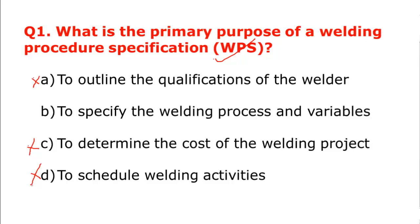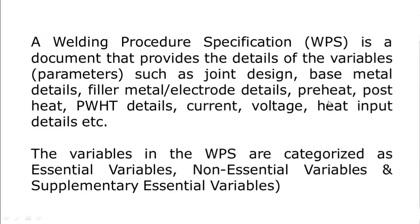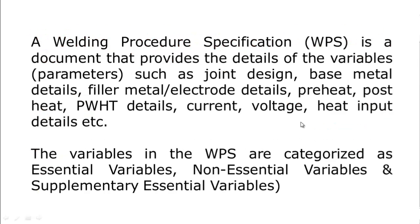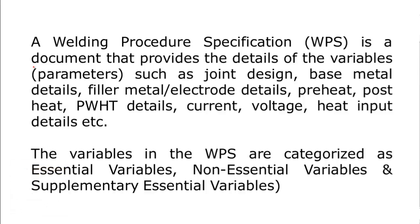In WPS, all the welding parameters to be used during welding are mentioned — the welding process and different parameters like base metal composition, filler metal variables, current, voltage, pre-heat, post-heat. These parameters are technically called variables, and their details are all documented in the WPS.